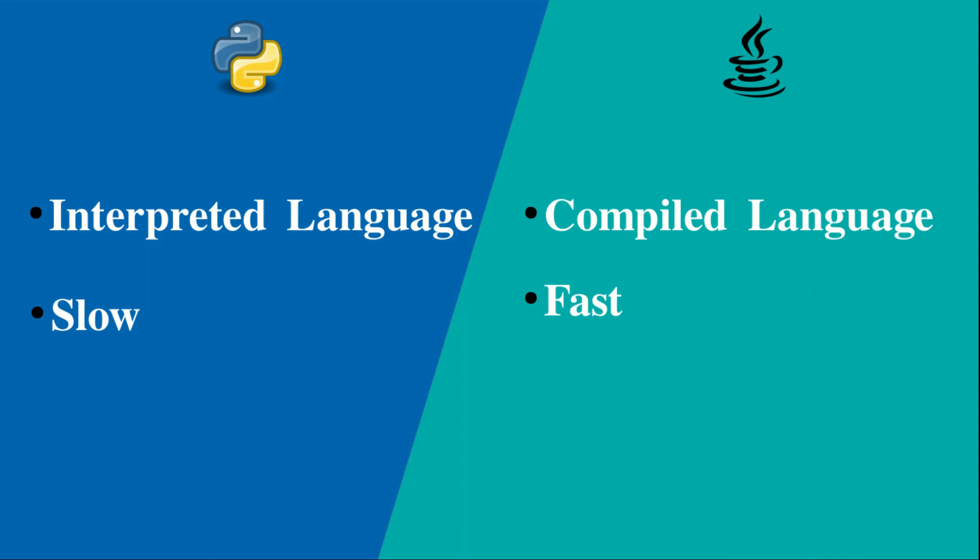That is the first point. We have to use Python as a simple default. Java will be faster than Python because of how Java is compiled and executed, compared to Python's interpreted execution.